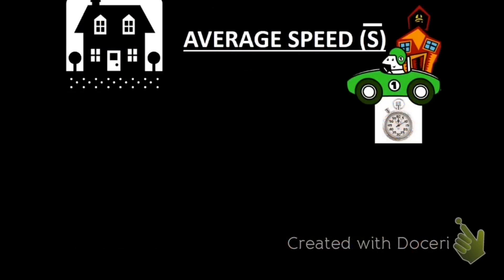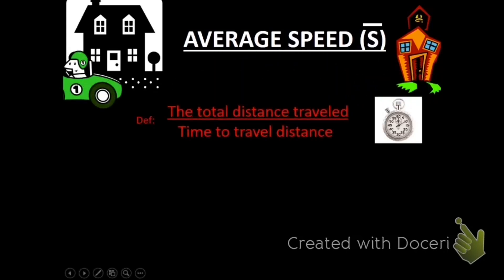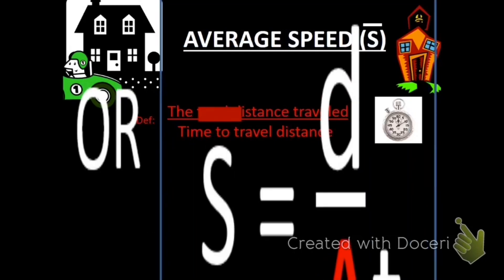If we want to know how fast something's going, using distance, we use average speed. We use the variable s with a little bar over the top, which I'll talk more about in a second. The definition of average speed is the total distance traveled by the object divided by the time to travel that total distance. And we can write that as an equation.